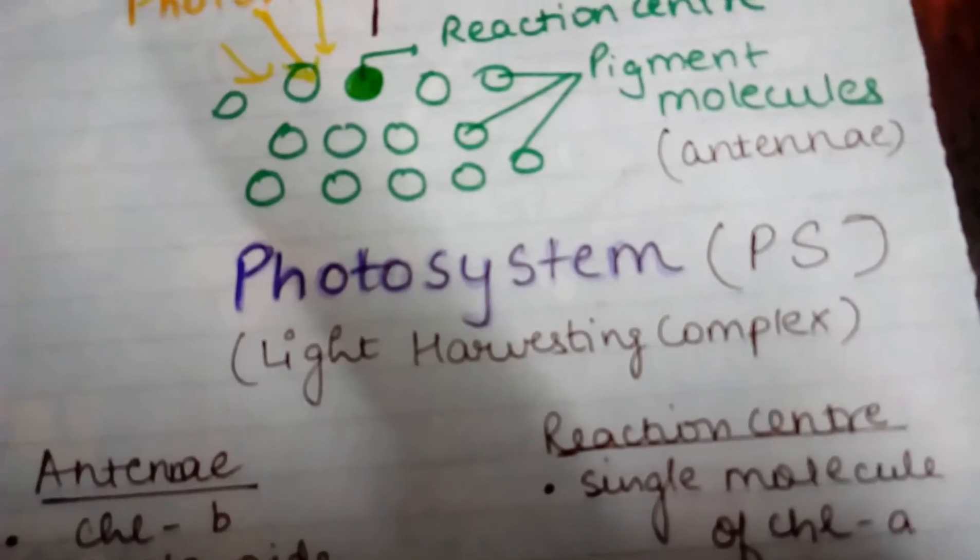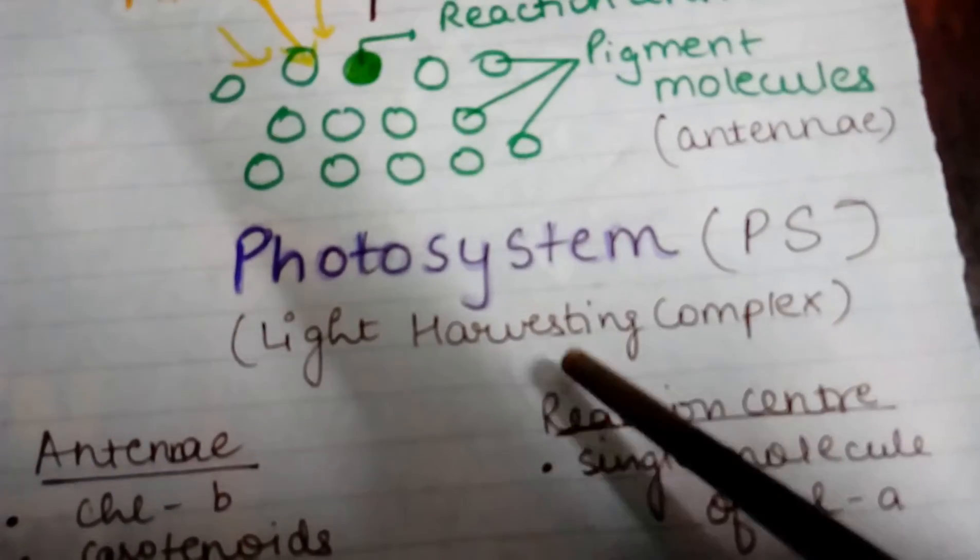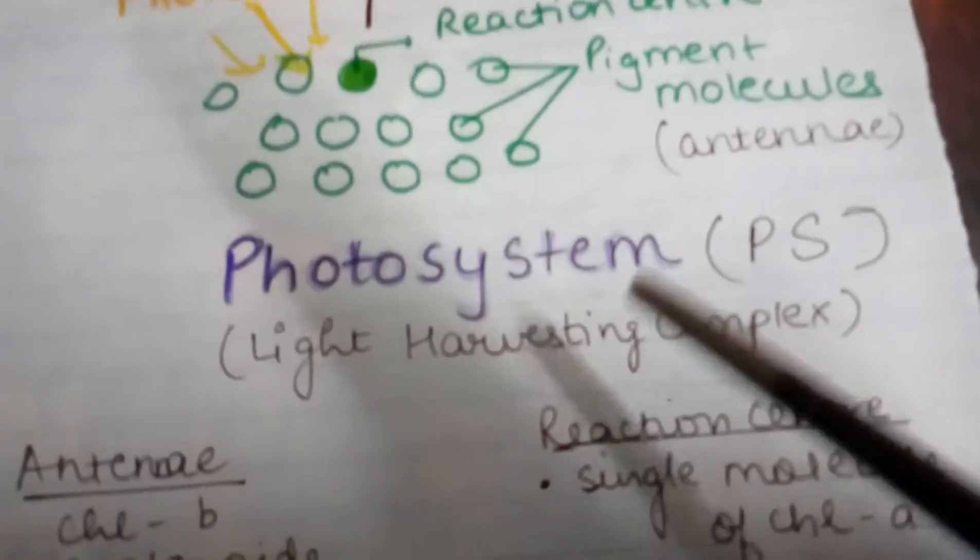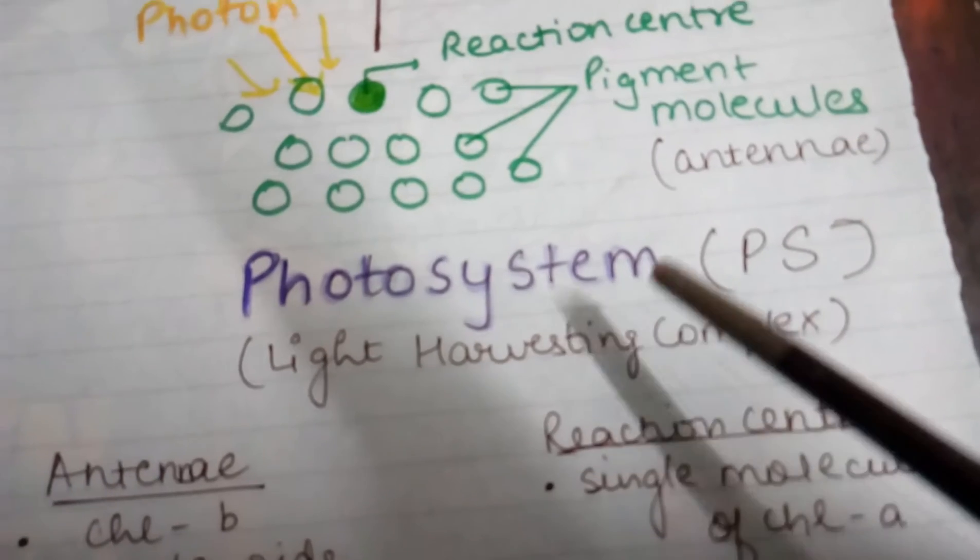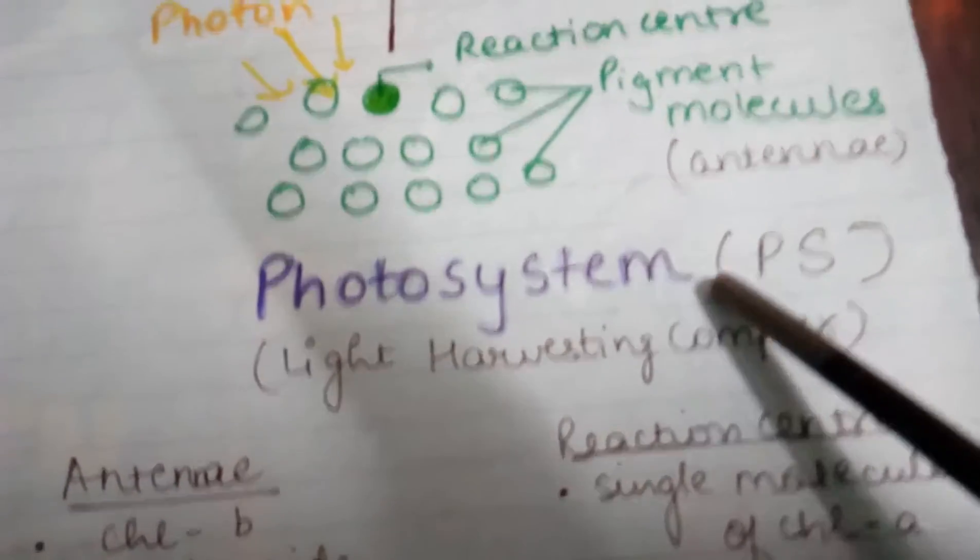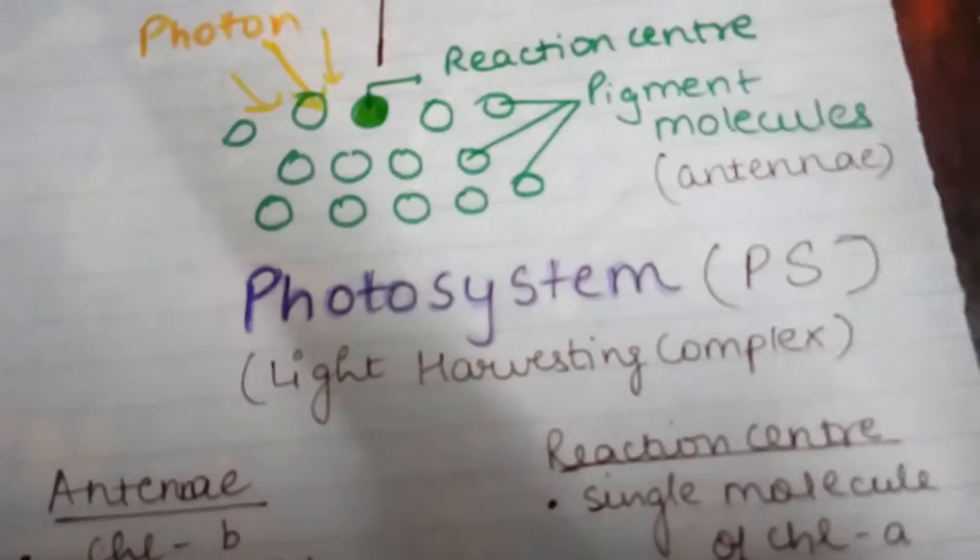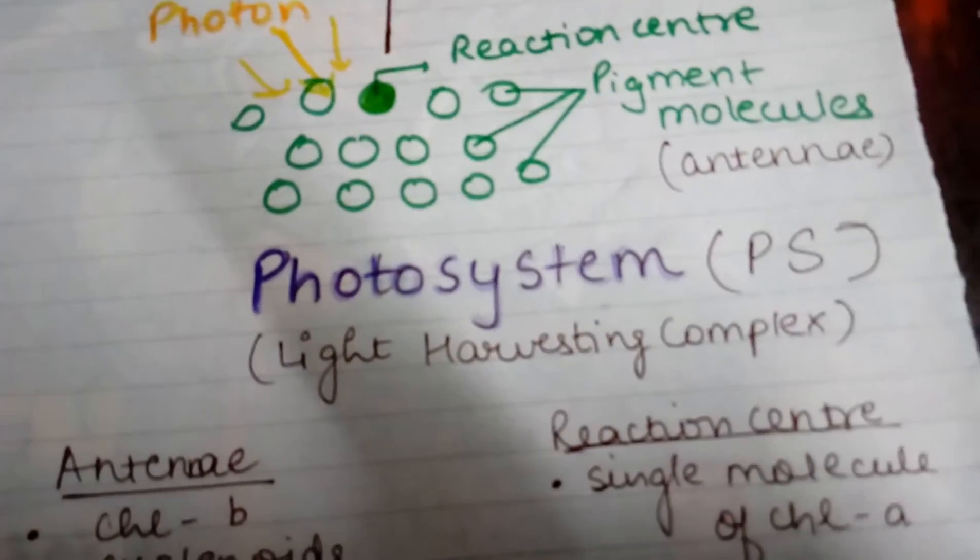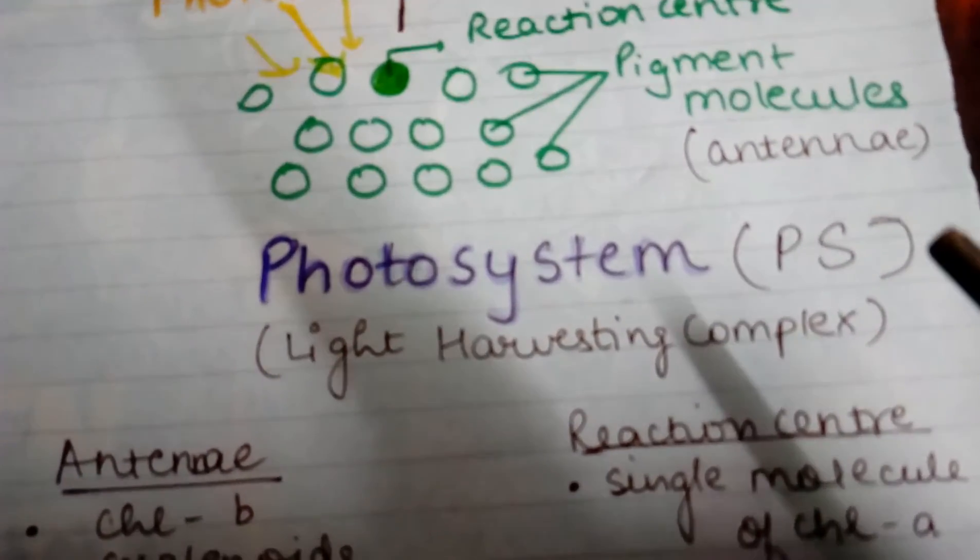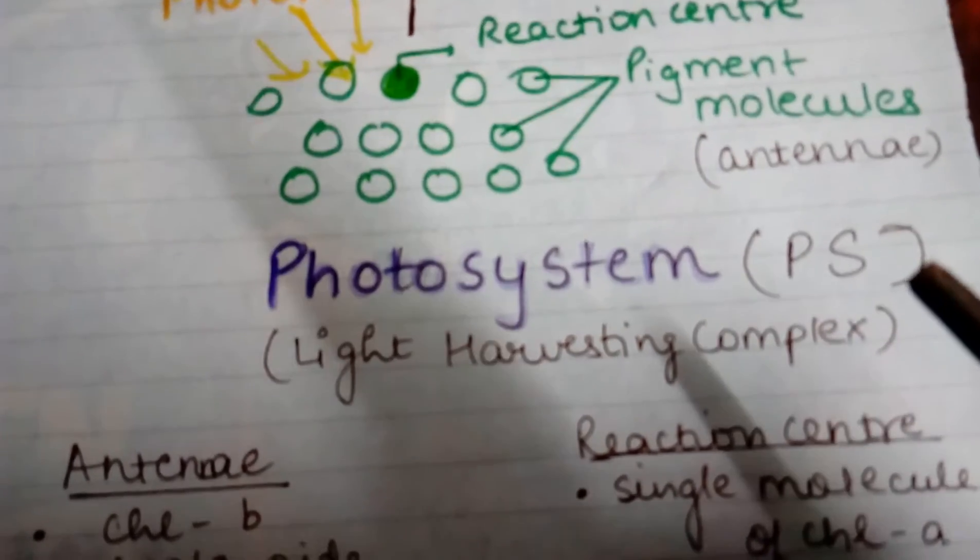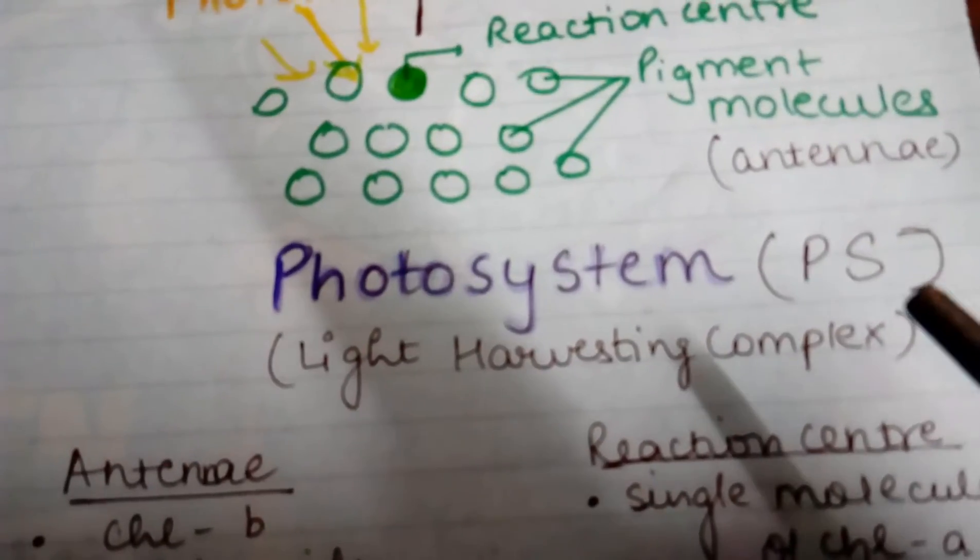Hello everyone, in this video we'll discuss photosystems or light harvesting complexes which are present in the thylakoid membrane and the stroma lamellae. These are responsible for trapping light energy and converting it into the energy currency ATP as well as NADPH.